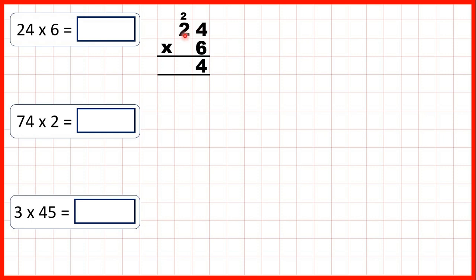Now we can move on to multiplying our tens digit. 2 times 6 is 12, but we need to add the 2 that's on top. So 2 times 6 is 12, plus 2 is 14. Now normally we write the first digit above the next place value column along, but because we don't have any more digits to multiply, we can just write the 14 in our answer line. So that gives us 144.